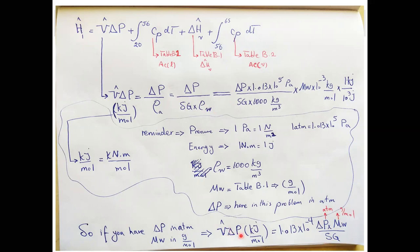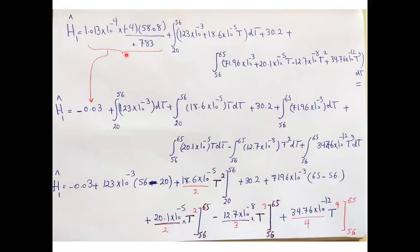The V·ΔP formula: if using solid or liquid, apply the formula with the constant 1.013 × 10⁻⁴ multiplied by ΔP, molecular weight, and specific gravity of the compound. For gas at low pressure change, you can ignore V·ΔP and consider it zero. Substitute the data for V·ΔP, Cp·dT, and evaporation enthalpy to finalize the H1 calculation using data from the table.